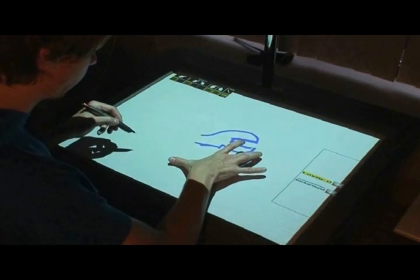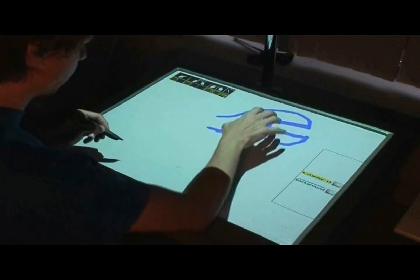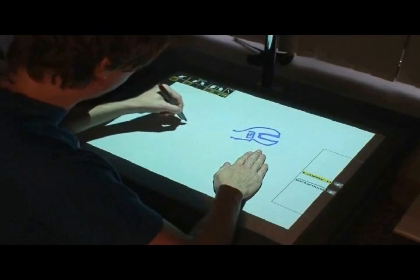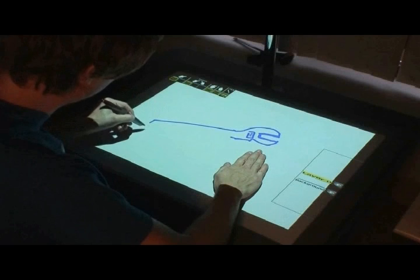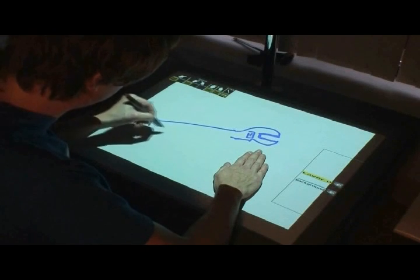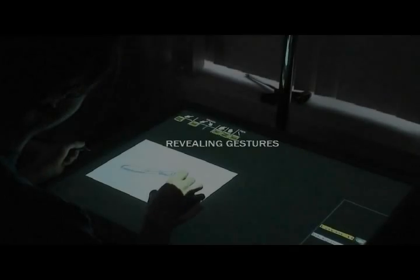A two-finger stretching and squeezing gesture zooms in and out. Touching with multiple fingers pans the drawing area. Simple postures with the non-dominant hand can be used to mode the pen's functionality. In this example, we constrain the drawing to straight lines.